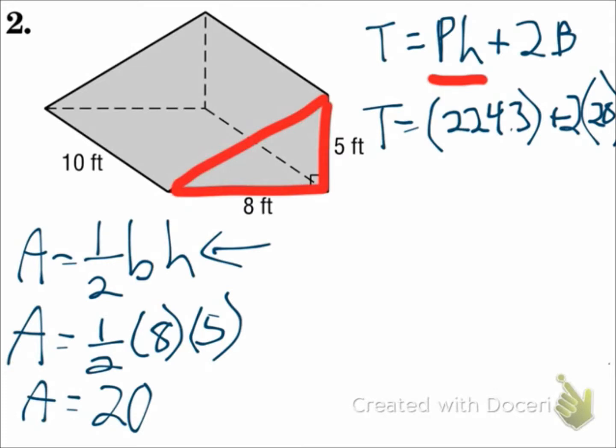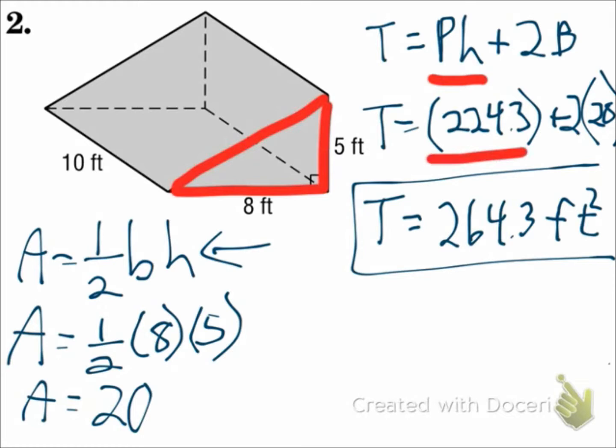So when I put all that together, the total surface area is going to be 264.3 feet squared. So use your lateral area right there, and then 2 times the area of the base.